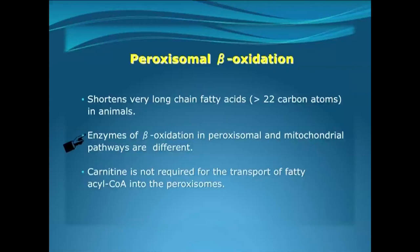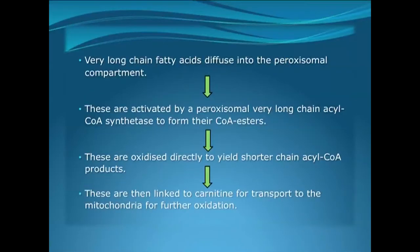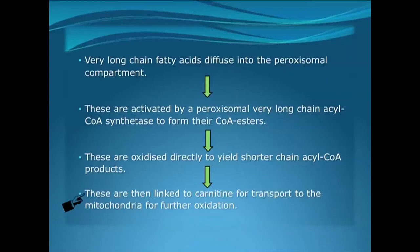The mitochondrial and the peroxisomal beta-oxidation differ significantly in the participation of their enzymes. One important difference is that carnitine is not at all required in the peroxisomal beta-oxidation. The very long chain fatty acids enter directly into the peroxisomal compartment, where they are acted upon by the very long chain fatty acyl-CoA synthetase enzyme. They are then reduced down to their lower homologues and finally condensed with carnitine, and then subjected to beta-oxidation in the mitochondrial compartment.